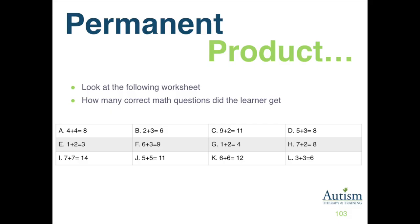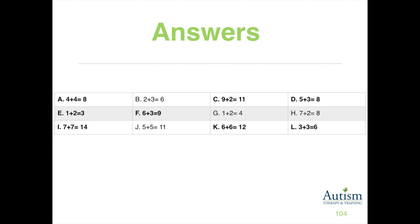Here is an example: if this was a worksheet submitted to you and you needed to score it, how many did the learner get correct? Eight are correct, and you could turn that into a percentage very easily.